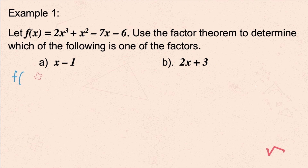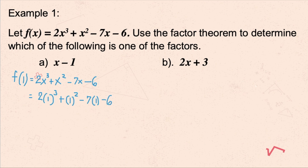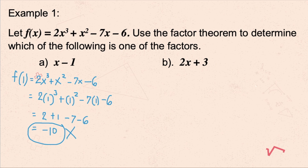Therefore, the function that you will use is f of 1. Solving f of 1, this will be 2 times 1 cubed plus 1 squared minus 7 times 1 minus 6. Evaluating this: 1 cubed is 1, times 2 is 2, plus 1, then 7 times 1 is 7, so minus 7 minus 6. Then 2 plus 1 minus 7 minus 6 is equal to negative 10. Since the result is non-zero, when we divide f of x by x minus 1, there is a remainder. Thus, x minus 1 is not a factor of the given f of x.